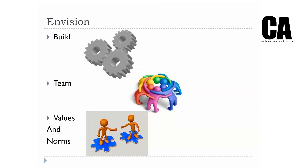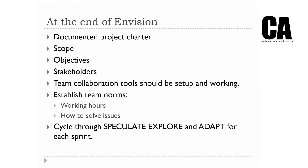The first stage is the envision stage. This is where you define and build your project, hire your team, and develop the values and norms of the team. In the envision cycle you need to document what you're doing, who's doing what, who's in your team, what tools you have to use, what software you need, and you need to outline the scope of your project — defining what your project is and what it isn't. If something falls beyond the scope, it might be a new project. You need to define who your stakeholders are.